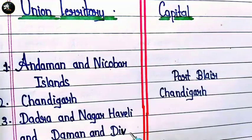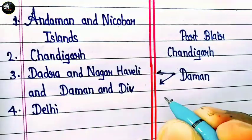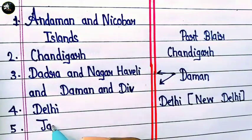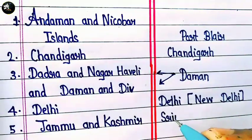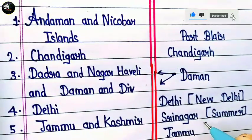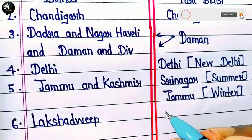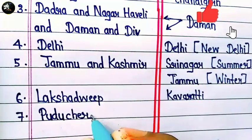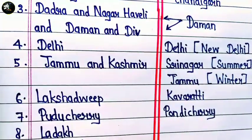Our next Union Territory is Dadra and Nagar Haveli and Daman and Diu and their capital is Daman. And next is Delhi and the capital is New Delhi. Next is Jammu and Kashmir and their capital is Srinagar in Summer and Jammu in Winter. Next is Lakshadweep and the capital is Kavaratti. And next is Puducherry and the capital is Pondicherry. And the last is Ladakh and the capital is Leh.